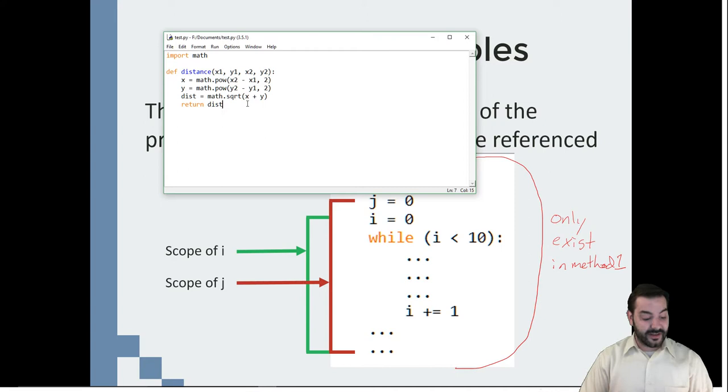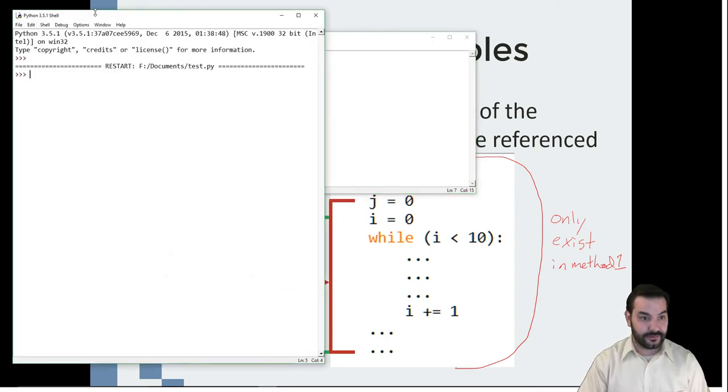Now, like I mentioned, if I run that code and I don't have that return statement, X, Y, dist, they don't exist anymore.